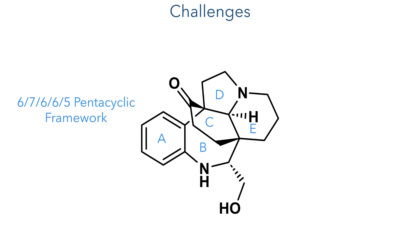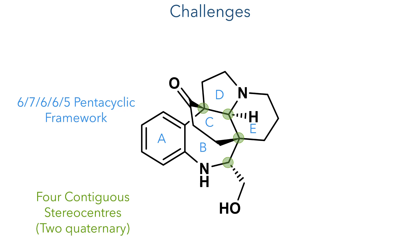The key challenge with the synthesis of this structure is the central seven-membered ring which is embedded in a pentacyclic framework. This framework contains four contiguous stereocentres, two of which are quaternary, and these quaternary centres form the junctions of the azabicyclo[4.3.1]decane core.